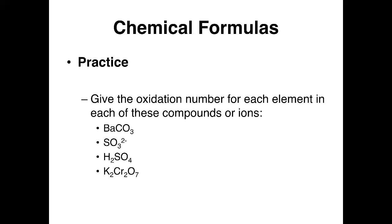K2Cr2O7. K is a 1A element, so it's plus 1. Oxygen is minus 2, and 7 times minus 2 is minus 14. Plus 2 times plus 1 leaves a minus 12. So 2 times whatever chromium is has to counterbalance minus 12 so it all adds up to 0. So chromium in this case has to be plus 6.